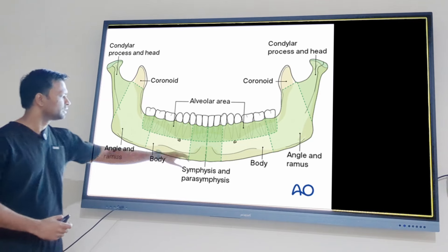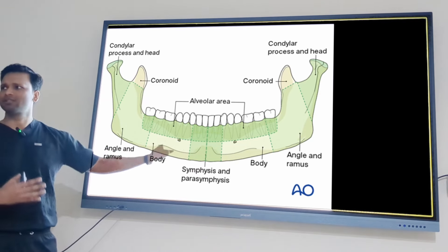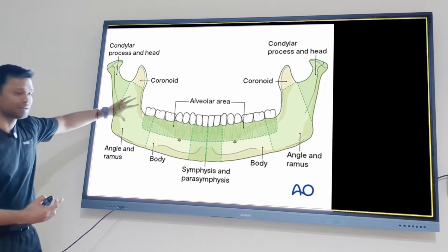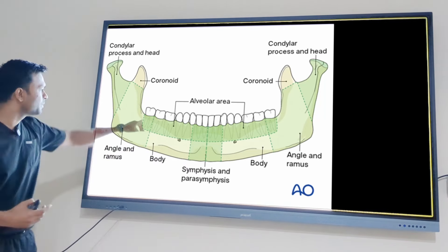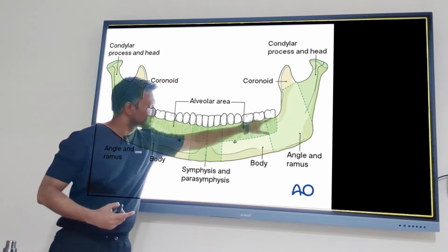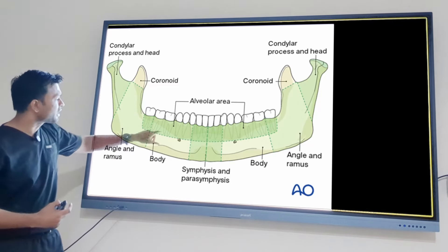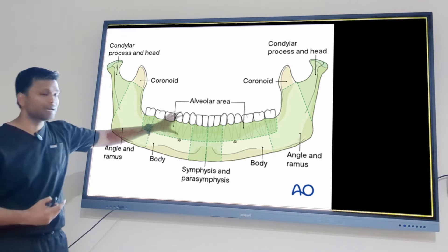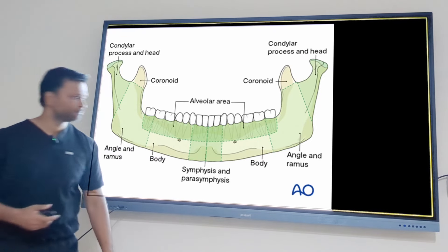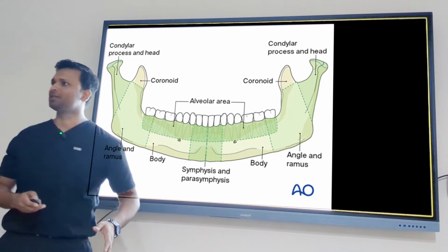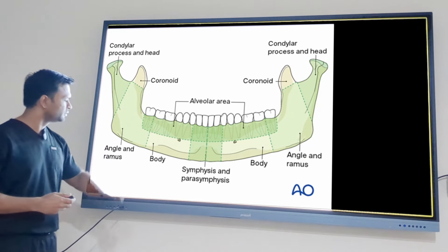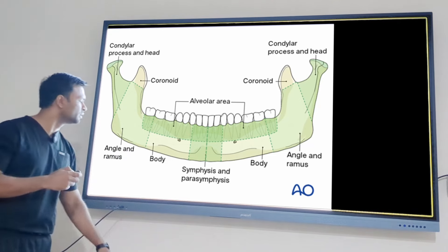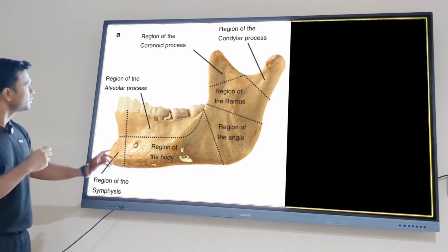If the fracture occurs exactly at the midline it is symphysis; in the next region it is parasymphysis, then body, angle, ramus, condyle, and coronoid. If the fracture occurs only in the alveolar process without including the basal bone, that is called a dentoalveolar fracture. This classification was given by Dingman and Natwig.